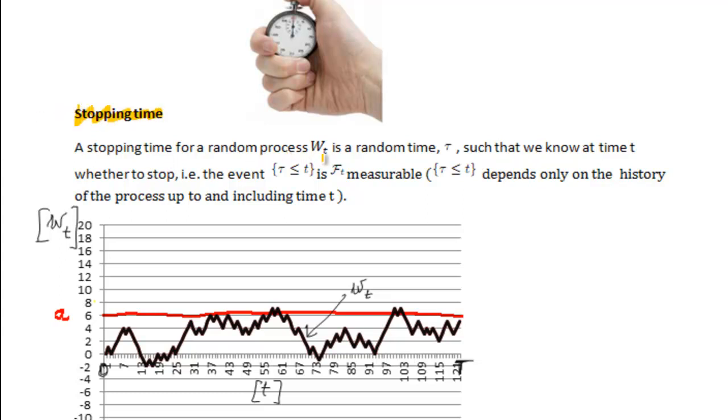A stopping time for a random process W is a random time tau such that we know at time t whether to stop, i.e. the stopping time which happens before time t is Ft measurable, which basically means that we know when to stop at time t. We don't need to look into the future to decide whether to stop or not.